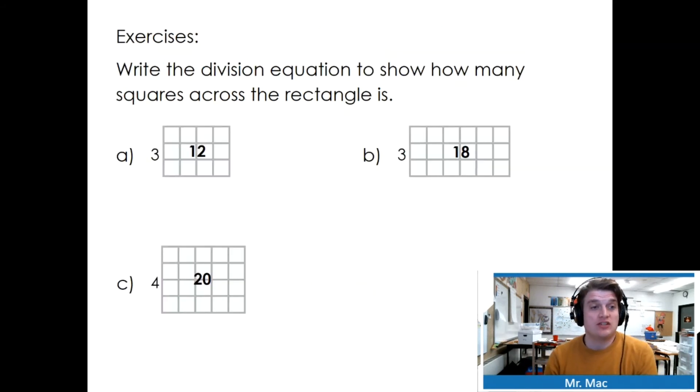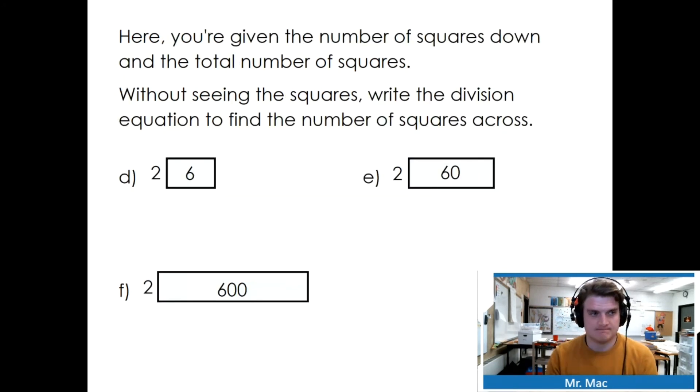Write the division equation to show how many squares across the rectangle is. If the total is 12, we need to remember Isabella's rule, which is the total goes first. 12 divided by 3 equals how many squares across the rectangle. We don't actually need to find the answer, just write the equation. Here you're given the total number of squares down and the total number of squares. Without seeing the squares, write the division equation. I know the total is 6 and I know the squares down is 2. What am I going to find? The squares across. Finish the next two.